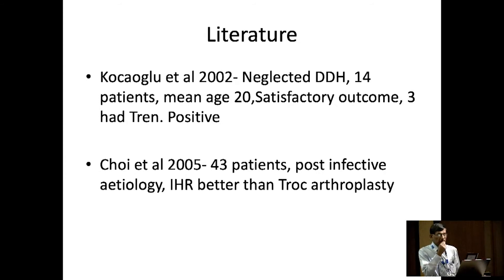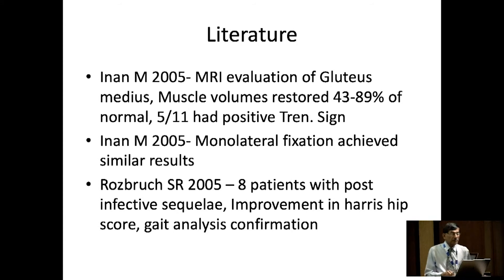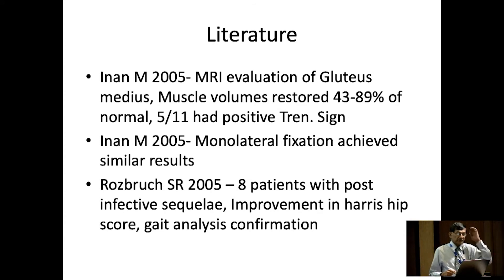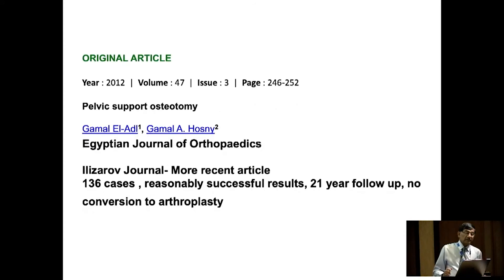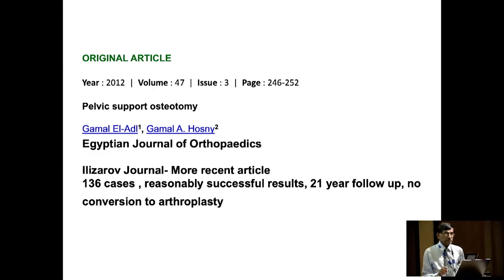Lots of literature. Mehmet Kocaoglu from Turkey — all his series were neglected DDH. Whereas Choi, which is the best group with a big cohort of post-infective etiology, said that IHR was better than trochanteric arthroplasty. Inan from Istanbul also published using a monolateral, but still had five out of 11 with a positive Trendelenburg sign. Rozbruch with Dror Paley published the first eight patients with post-infective sequelae. Professor Hosny had published originally in the Egyptian Journal of Orthopedics, and more recently in the Ilizarov journal — 136 cases, reasonably successful results, 21-year follow-up, with no conversion to arthroplasty until then, though I think he has since published a case report where one was converted.